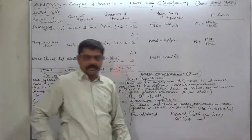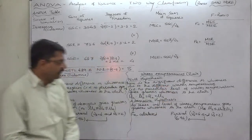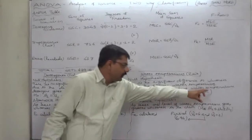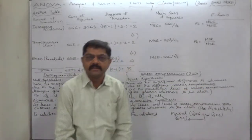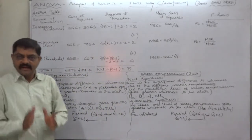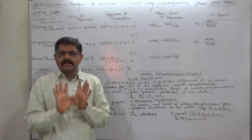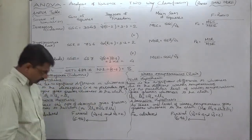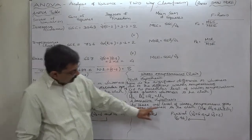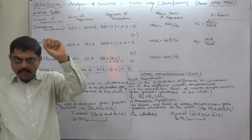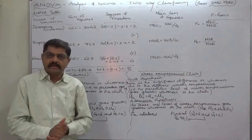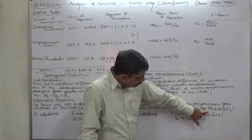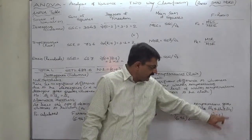In case of water temperatures, the null hypothesis is: there is no significant difference in whiteness due to the different levels of water temperatures. The exact meaning is that no particular level of water temperature gives greater or better whiteness to the cloth. If this null hypothesis is rejected, the alternative hypothesis is that at least one level of water temperature — cold, warm, or hot — gives greater or better whiteness to the cloth.